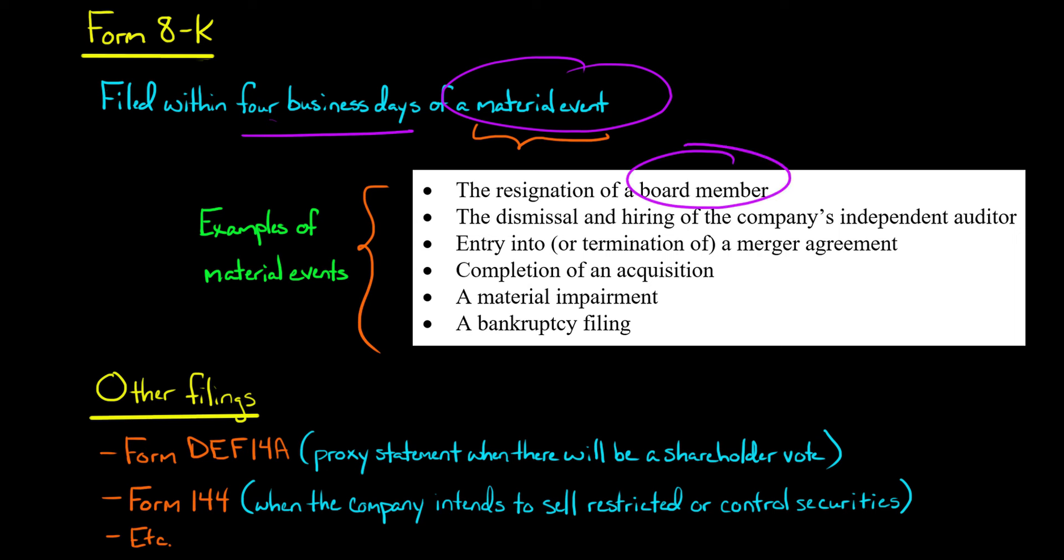So what are some examples? A board member decides to quit. Now that could just be they had some personal stuff going on, or it could be they didn't like something the company was doing. So that's a material event—board member quits. The company were to fire their auditor, so they dismiss the auditor, hire another auditor. That's a material event. You want to know about that. Hey, what's going on? Why did they fire their auditor? Was there a dispute about the accounting? Is there something I should know about?